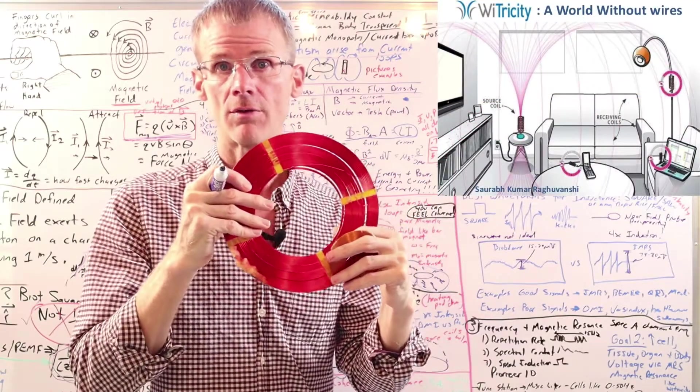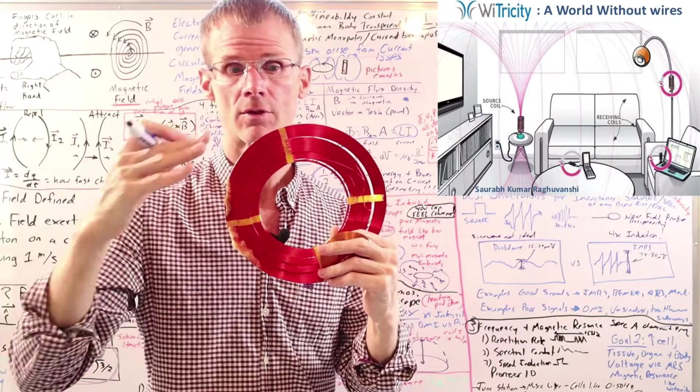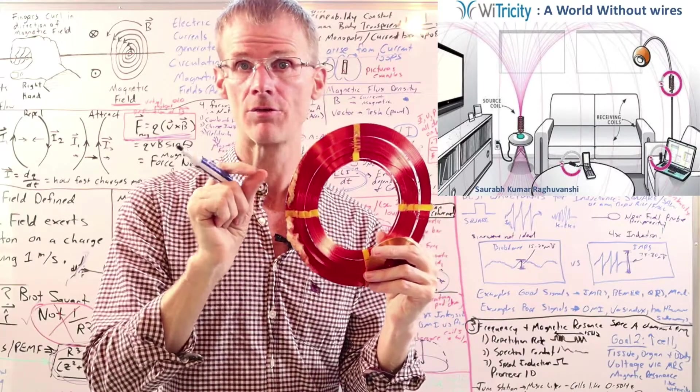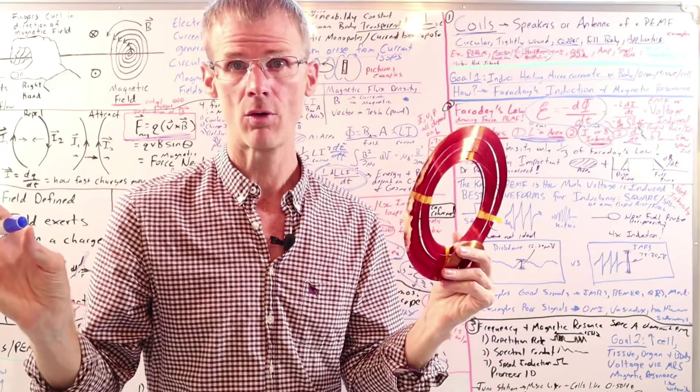And what WiTricity found was their equations for power transfer depended on the size and geometry of the coils, the distance away, and the magnetic resonant frequencies. Intensity wasn't even part of the equation.